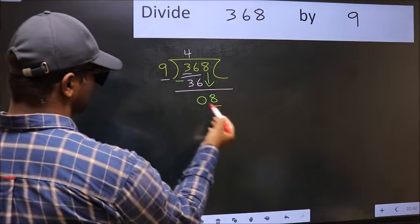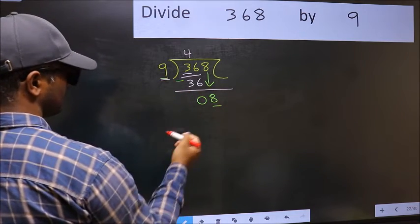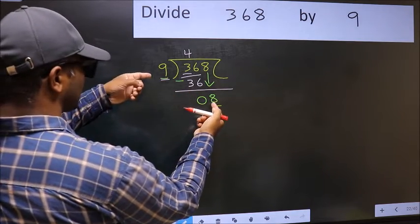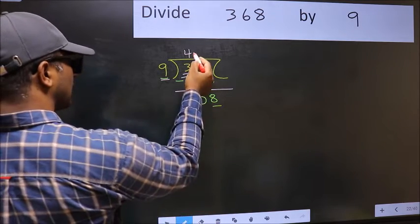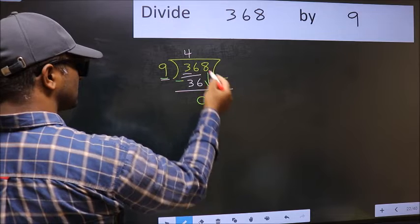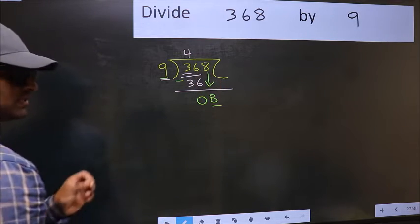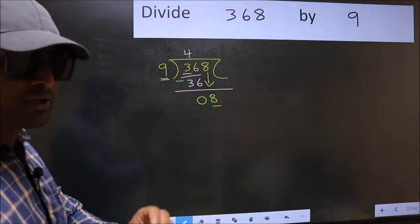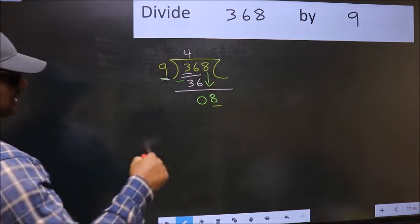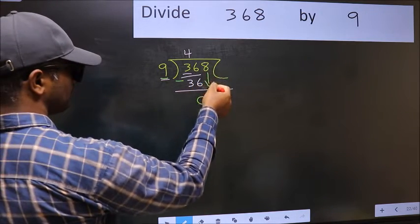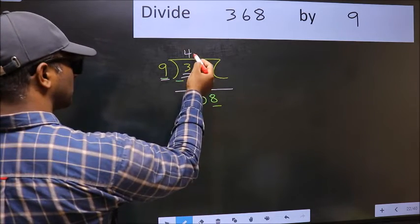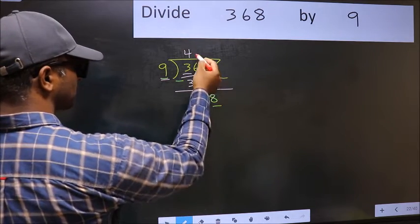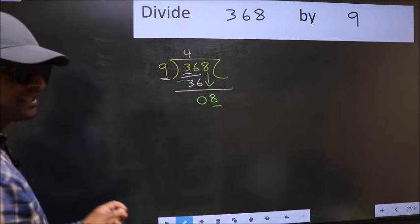Here we have 8 and here 9. 8 is smaller than 9. So, what many do is, they directly put dot and take 0, which is wrong. Why is it wrong? Because just now you brought this number down, and in the same step, you want to put dot and take 0. Which is wrong.